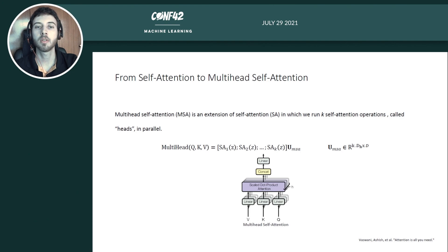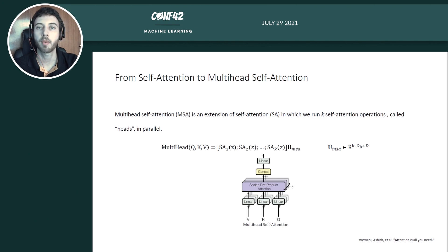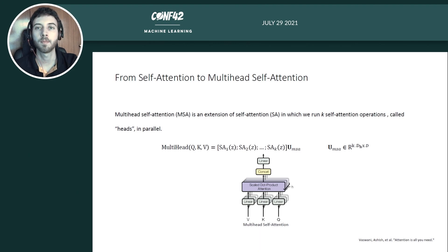However, the transformer doesn't use regular self-attention — it uses a generalization called multi-head self-attention. Multi-head self-attention runs k self-attention operations in parallel, concatenates them, and then applies a linear projection back to dimension D to avoid exploding the dimensionality.